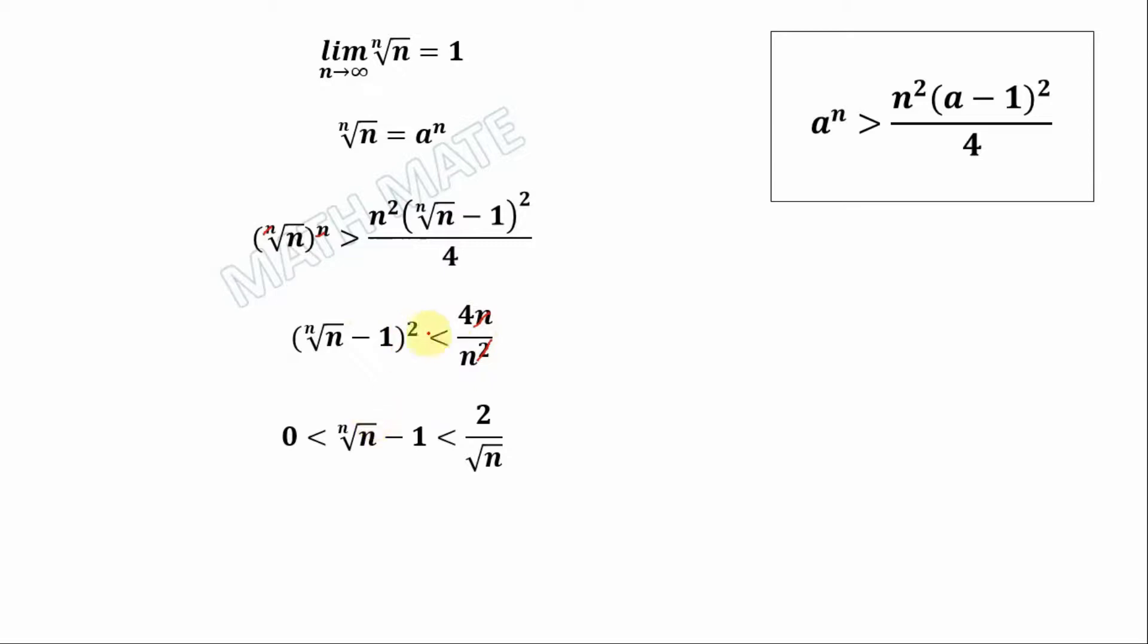In this case we cancel this power and here we have 2 divided by square root of n. It's obvious that our expression is more than zero. Let's add 1 to all expressions.